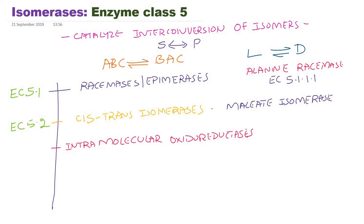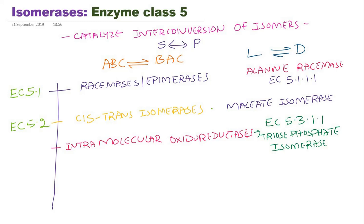The example here is EC 5.3.1.1 — the enzyme triose phosphate isomerase. This enzyme can be seen in the glycolysis reaction. This group of enzymes belongs to the EC 5.3 series.